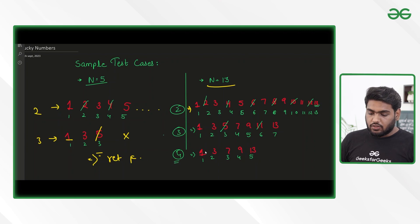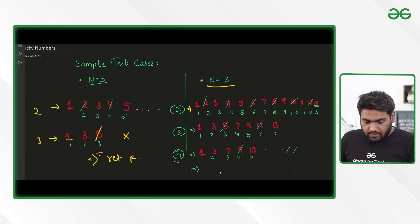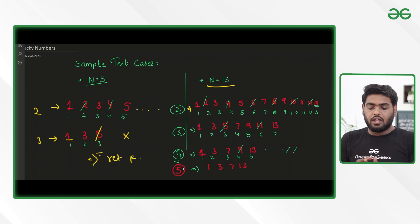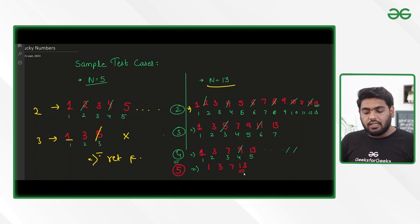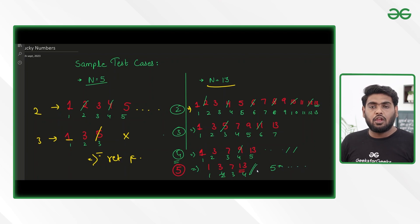Now we have to cancel every fourth element. Once we do that, 9 will be cancelled. The remaining set will be 1, 3, 7, and 13. The next pass value is going to be 5 — from further on we cancel every fifth, then sixth, then seventh. Notice that 13 is now at the fourth position. Since we are cancelling fifth positions and ahead, 13 is safe. We do not need to check further.